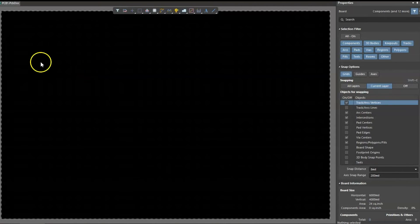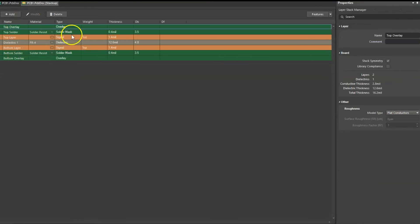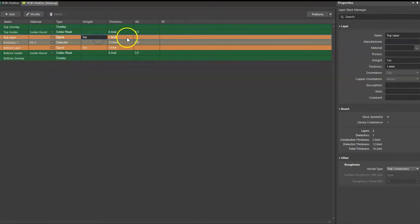And once you get inside the layer stack manager, you'll be able to actually set the copper weight that you want on each layer. So right now, just by default, it comes up with one ounce, they mean one ounce per square foot. Here, you click on this drop down menu, and you've got a whole lot of options. So from here, you can edit your stack up.